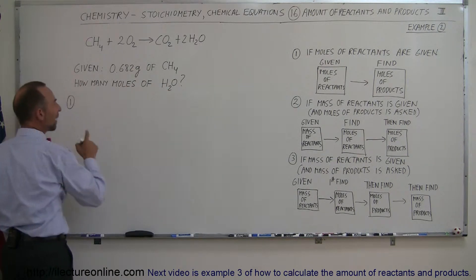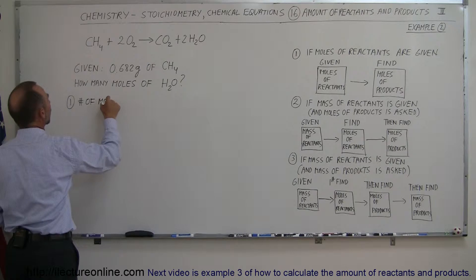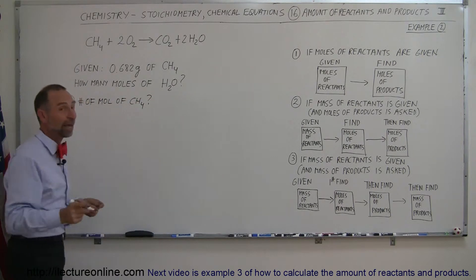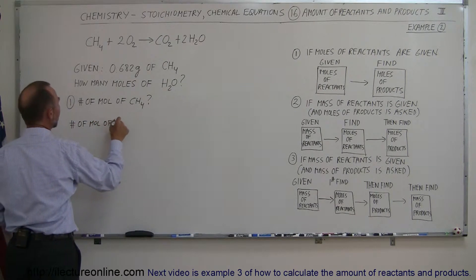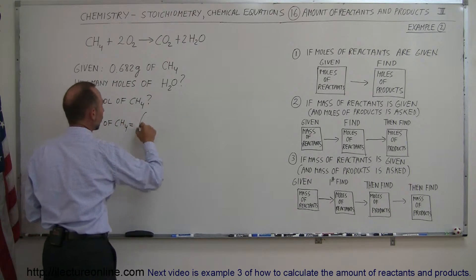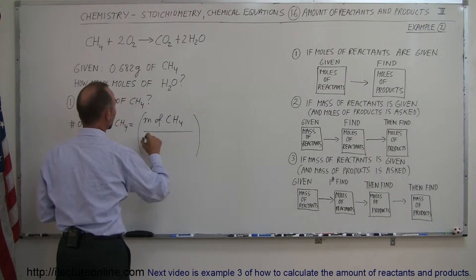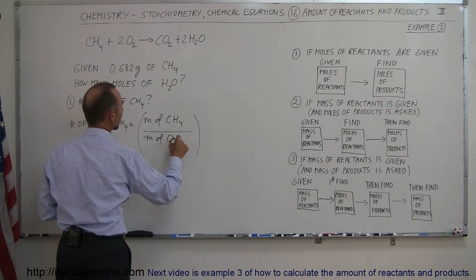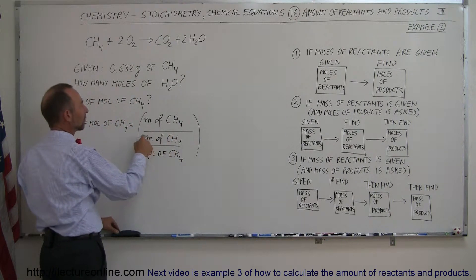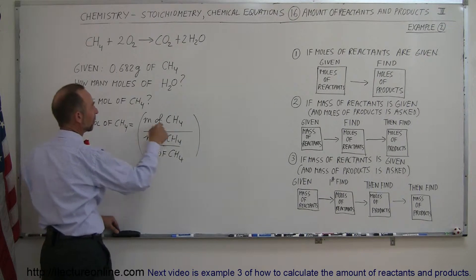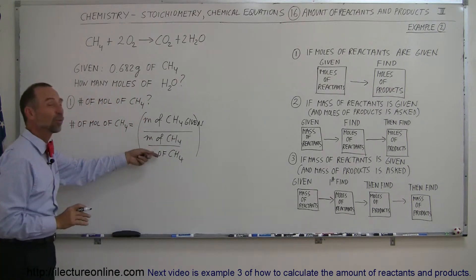Step number one: we need to find the number of moles of the reactants — the number of moles of methane. The equation is that the number of moles of methane is simply equal to the ratio of the mass of methane divided by the mass of methane per mole of methane. The mass of methane cancels out, so this is just the ratio of mass per mole.